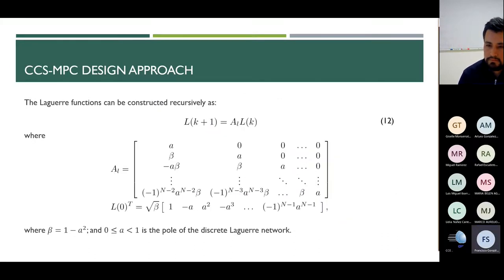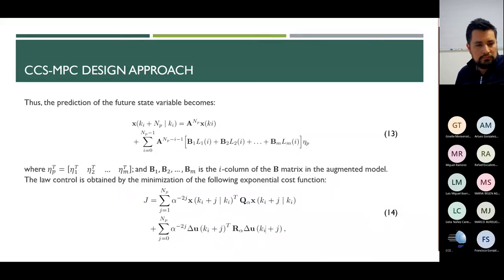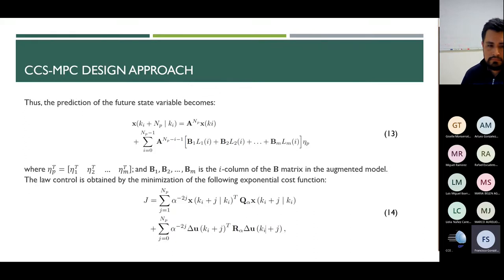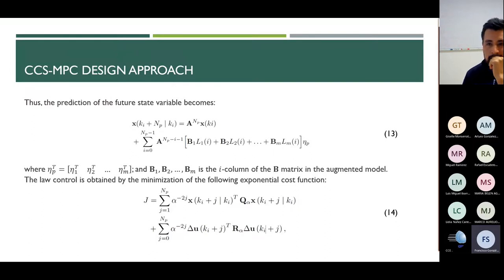The Laguerre function can be constructed recursively as in Equation 12. For a MIMO system, each control input is associated to its respective set of Laguerre functions and coefficient vector eta. The size of matrix A_L equals the number of control signals. The prediction of the future state variables becomes Equation 13, where eta_p contains the coefficients to be minimized corresponding to each control signal, and b-hat 1 to b-hat m are the columns of the B matrix. The control law is obtained by minimization of the cost function in Equation 14.